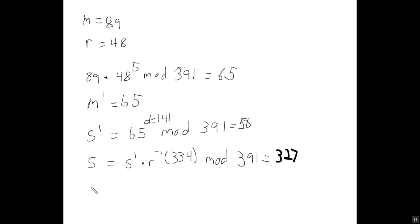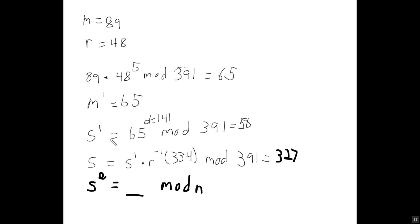Our verifier can now recover the original message m by taking s to the e power, mod n. Sure enough, 327 raised to the e power mod 391 turns out to be 89, which is our original message.